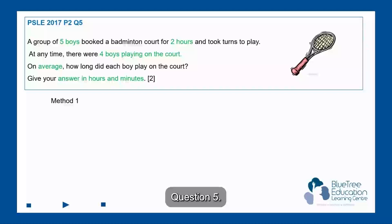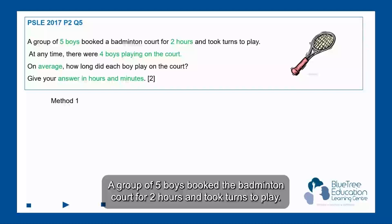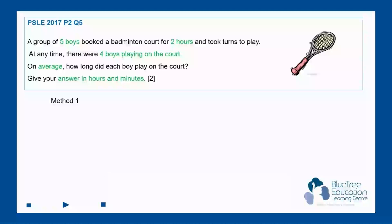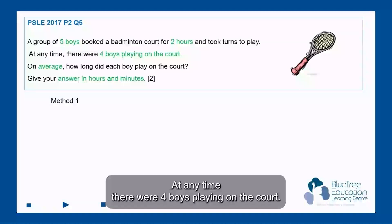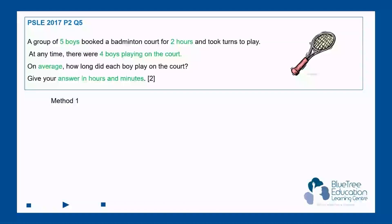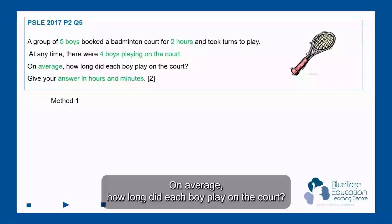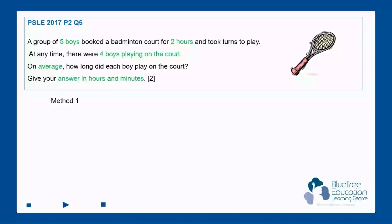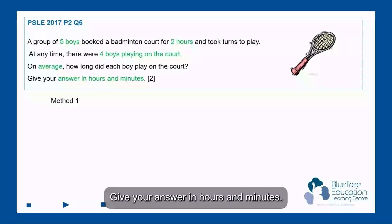Question 5. A group of five boys booked the badminton court for two hours and took turns to play. At any time there were four boys playing on the court. On average, how long did each boy play on the court? Give your answer in hours and minutes.